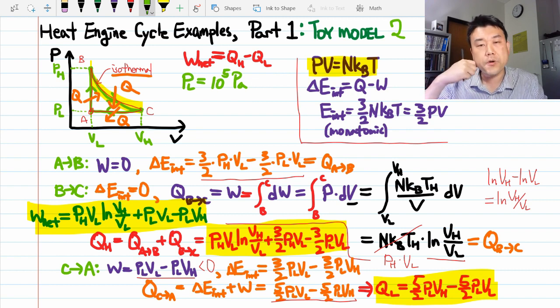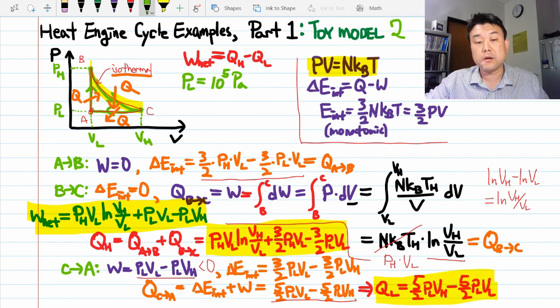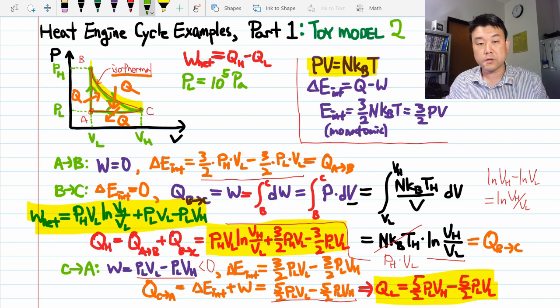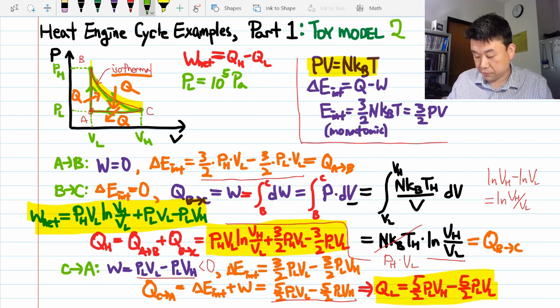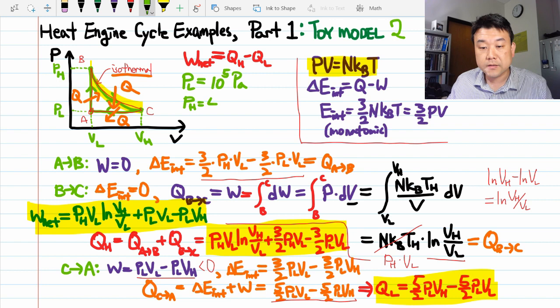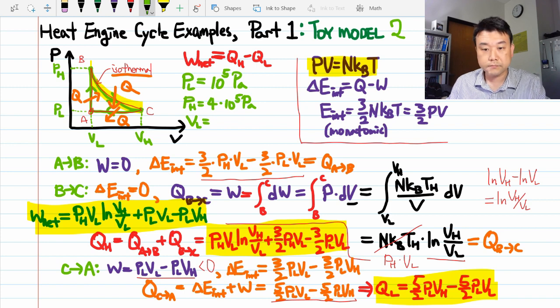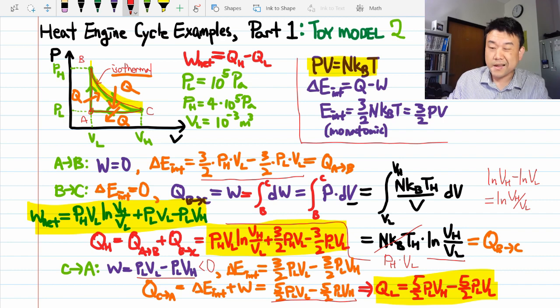Now, in toy model number one, we chose the high pressure to be double this. But I want to make the temperatures comparable for the reasons you'll see later. So, that means the highest temperature point in toy model one was 4 times the lowest temperature, since it's double the pressure, double the volume. So, I'm going to make this high pressure point be equal to 4 times 10 to the 5 Pascals.